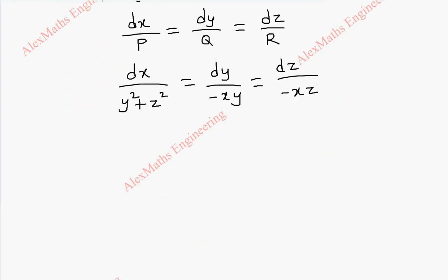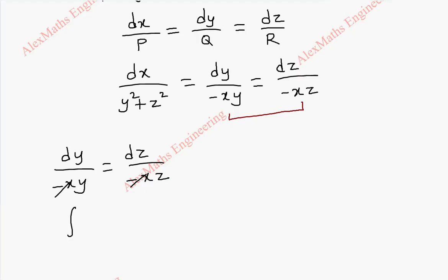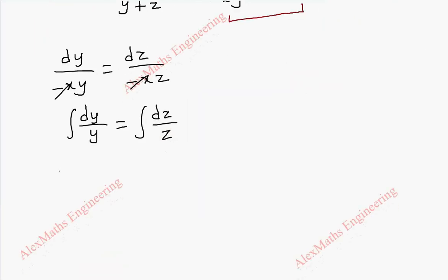Taking the last two terms we get dy by minus xy equal to dz by minus xz. Both sides we can cancel minus x, and now we have variable separable form. So we are going to integrate on both sides — y terms on one side and z terms on the other side. On integration this is log y equal to log z plus log c1. Since all are log, the constant is taken as log c1.